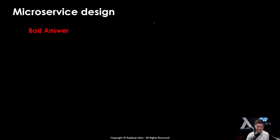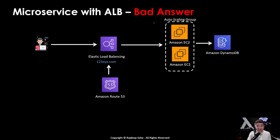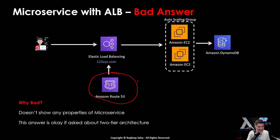Next question that comes up a lot: can you tell me a microservice design on AWS? A bad answer is: I will use application load balancer with EC2, application load balancer with EKS, or API Gateway with Lambda. Some folks even add that they will create auto scaling groups so the load balancer distributes traffic, and use Amazon Route 53 to assign a custom URL to the load balancer. This answer does not show any properties of microservice. The big properties of microservice are independent functionality — each microservice should serve independent functionality and can be independently developed, scaled, and deployed.